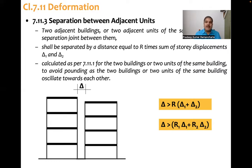These are calculated as per 7.11.1 earlier clause for two buildings or two units of the same building to avoid pounding as the two buildings or two units of the same building oscillate towards each other. They might oscillate towards each other. So if dynamic characteristics are same, then they'll oscillate in sync. But if they have different dynamic characteristics, then they might oscillate out of phase. And sometimes they pound, they collide with each other.